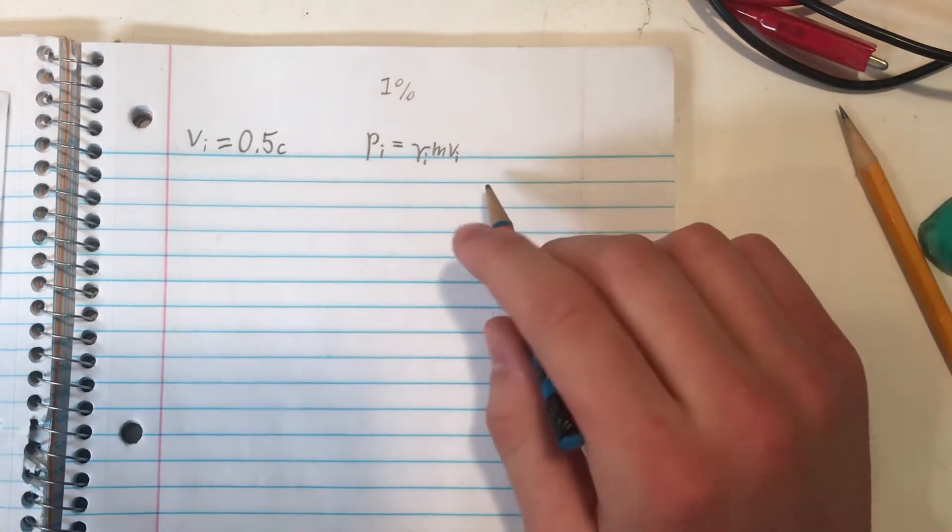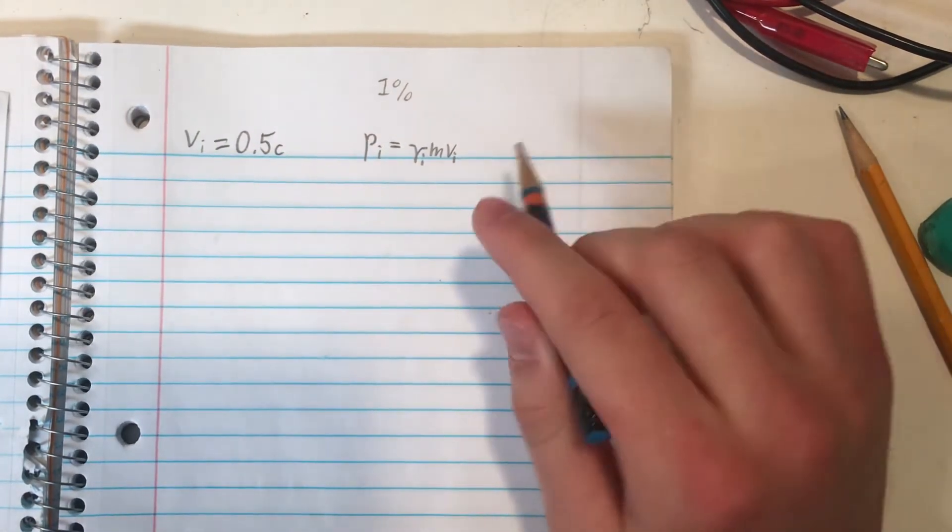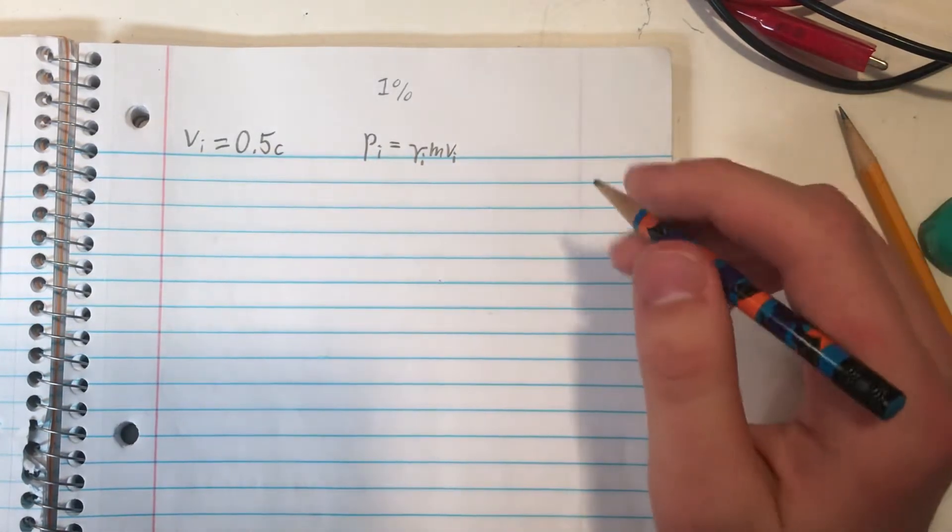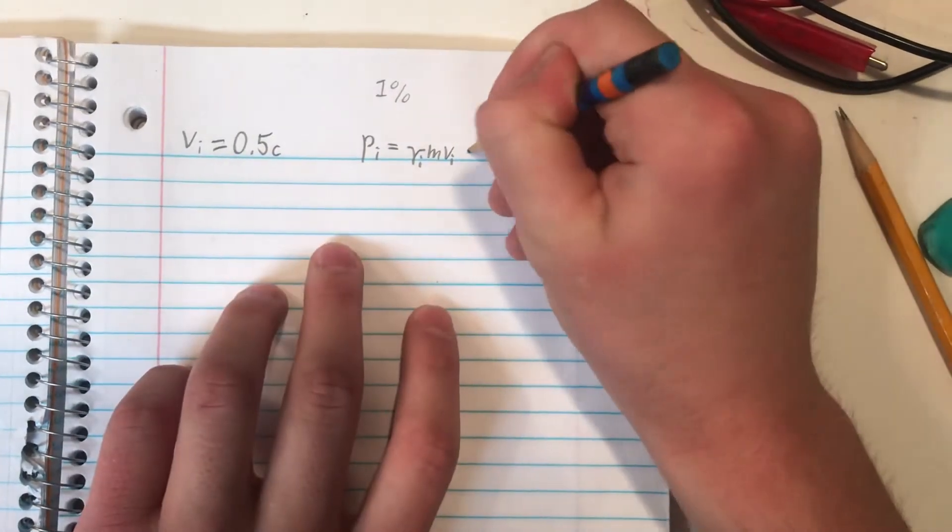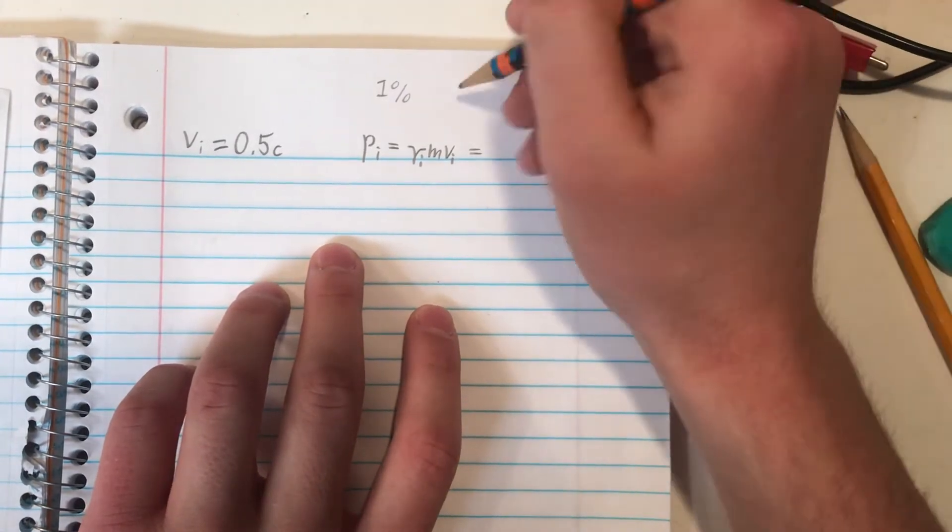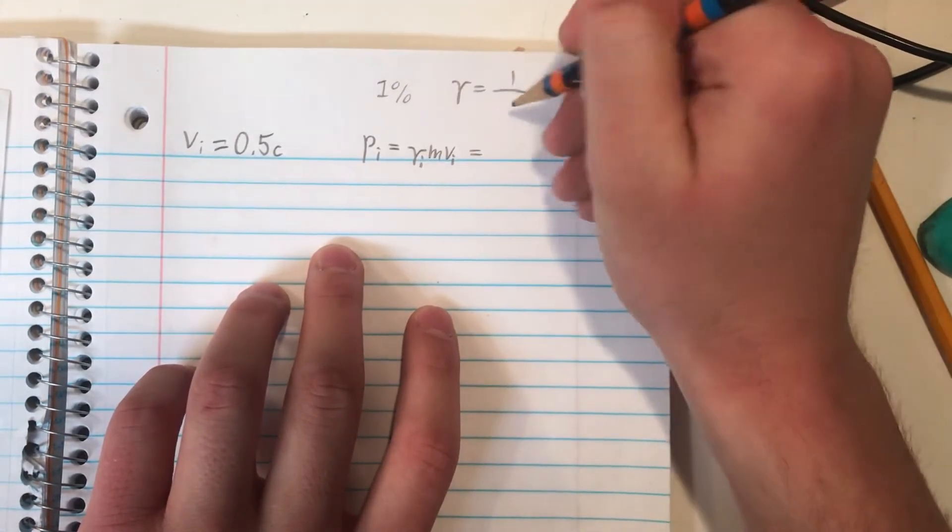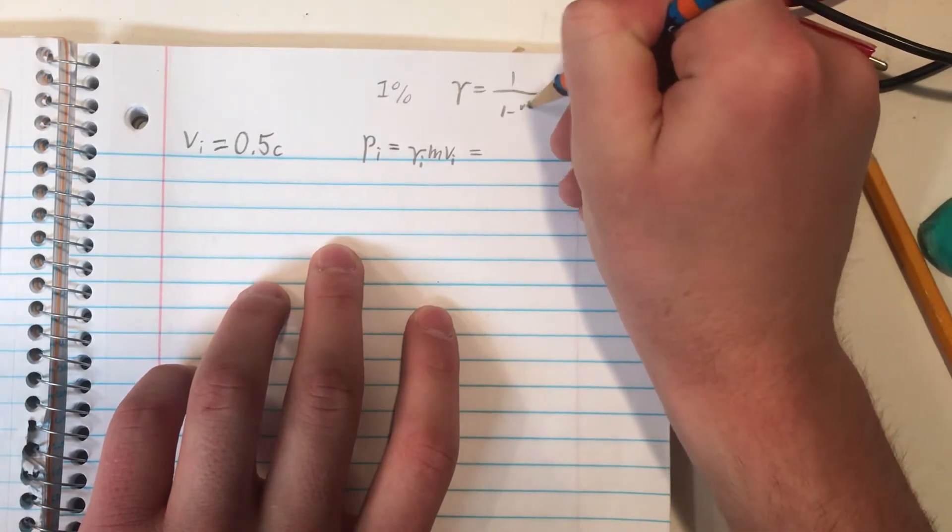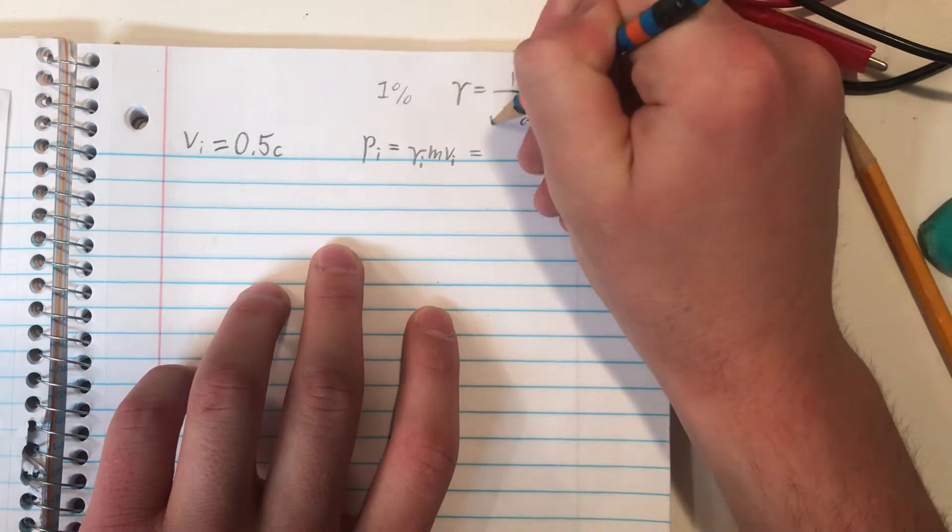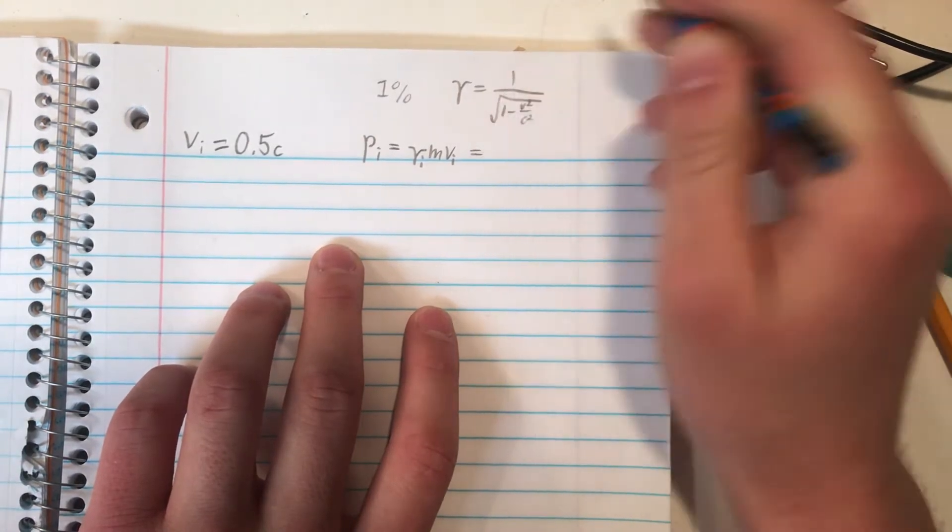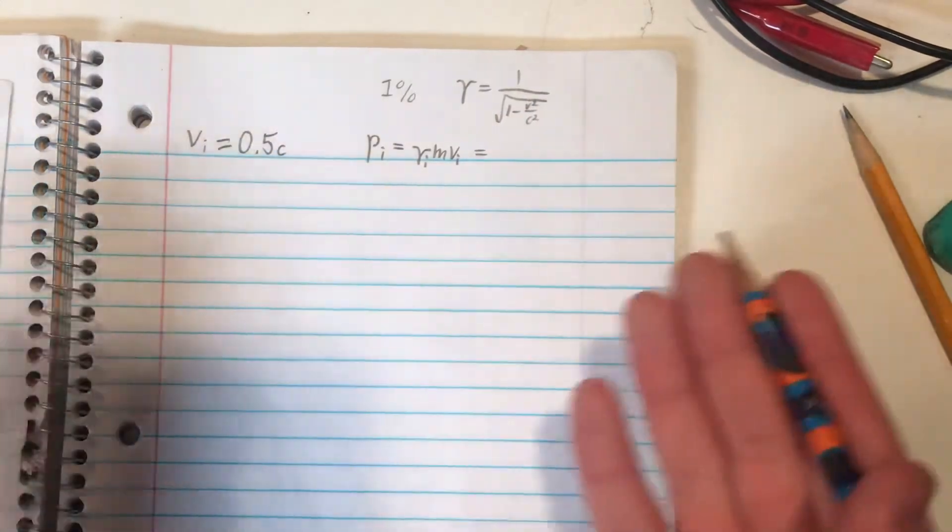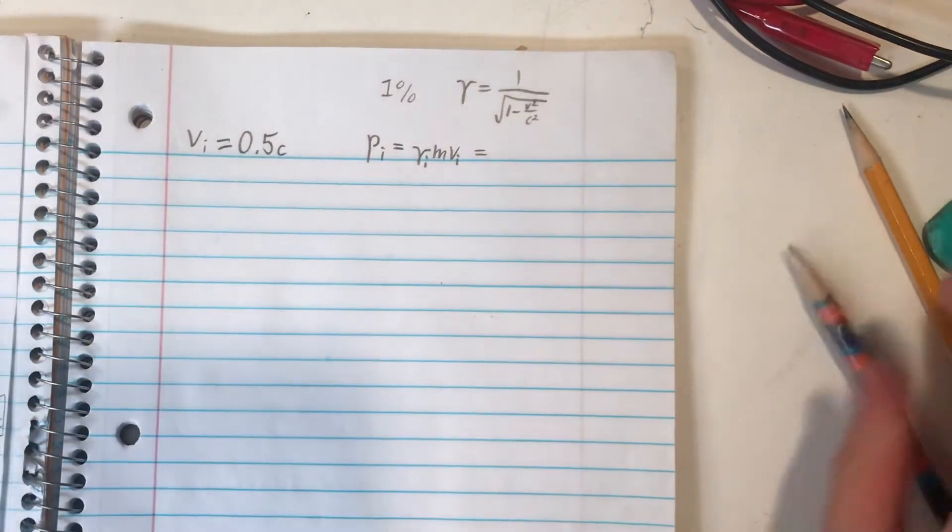Now, first, let's try and get a rough approximation of what the initial momentum would be based on this speed. Let's rewrite the Lorentz factor here, because the Lorentz factor is equal to 1 over the square root of 1 minus v squared over c squared, all in the square root. So if we're going to try and approximate the initial momentum here, let's take advantage of that formula.